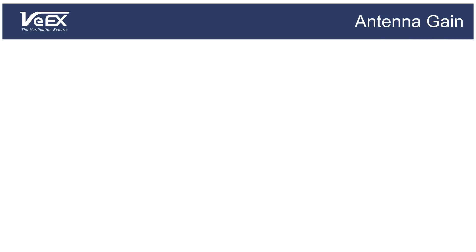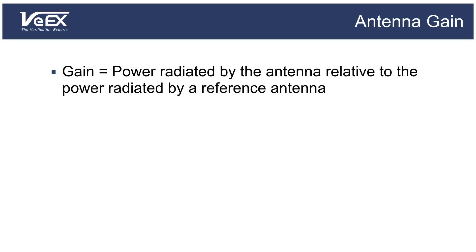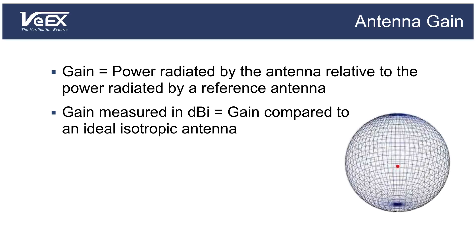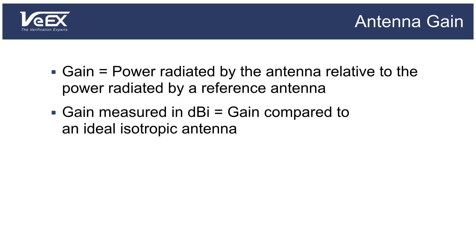Antenna gain is a relative measure. It measures how much of the power is radiated in a given direction compared to the power radiated by a reference antenna. Antenna manufacturers use two types of reference antennas: the isotropic and the dipole. If the gain is expressed as dBi, then the antenna efficiency is compared to an isotropic radiator, which is an ideal antenna where power radiates equally in all directions — basically a sphere. An antenna providing a gain of 3 dBi is equivalent to doubling the power compared to an isotropic antenna.